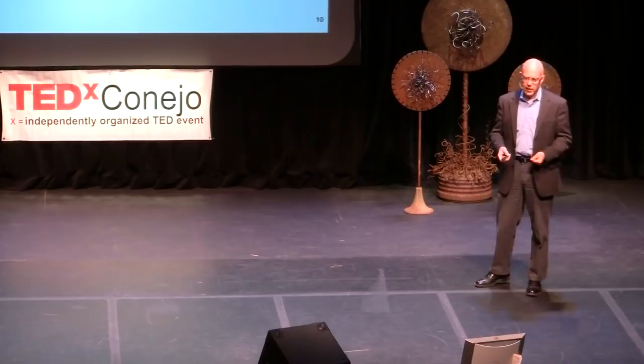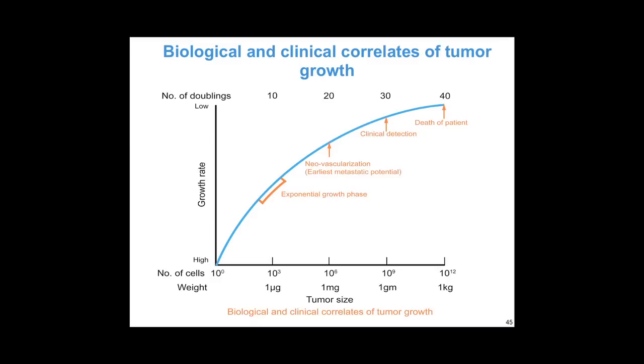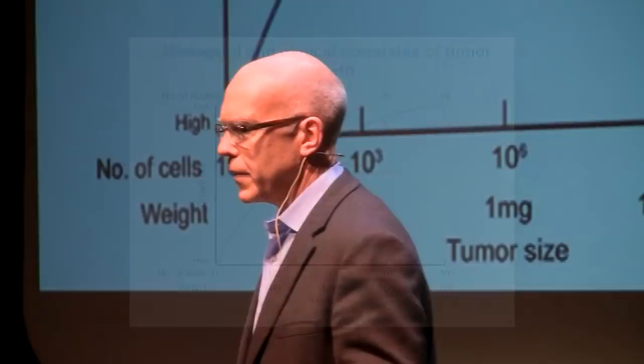I want to spend most of the time talking about what's going on within the cell and within the body, because I think this is the best way of understanding the enormous challenge we face. On this slide, on the horizontal axis, you can see the number of cells. Cancer begins in a single cell — 10 to the 0, one cell — and you can see the number of cells increasing, with an estimate of the size of the tumor underneath. In this early phase, there is what we refer to as exponential growth: one cell gives two, two gives four, four gives eight, eight gives 16, and so on — a high growth rate in this early phase.